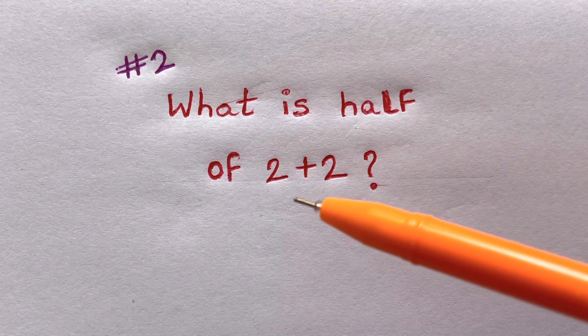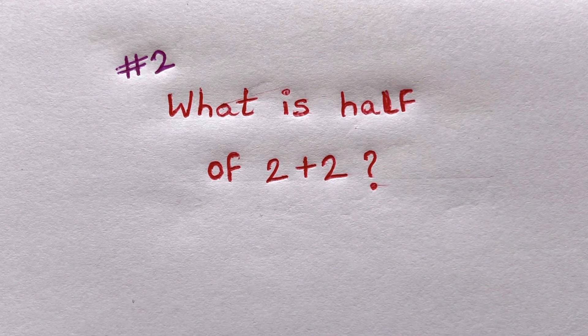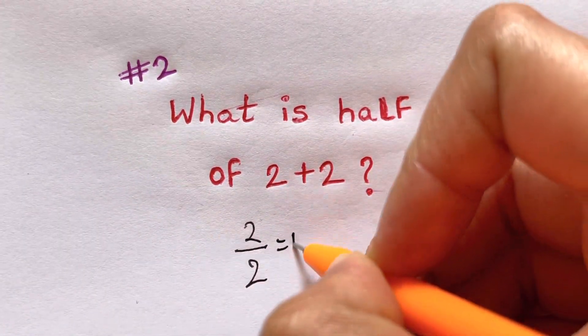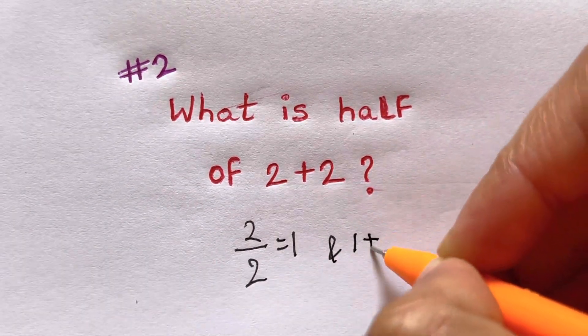So the answer is not 2, but 3. How? Because 2 divided by 2 is 1, and 1 plus 2 is simply 3.